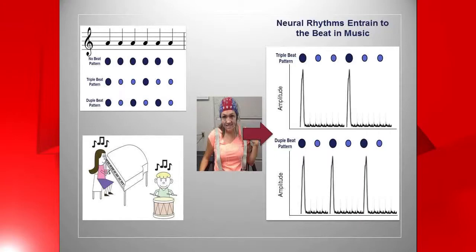If you heard two strong beats, it might sound something like: one, two, three, four, five, six. If you heard three strong beats, it might sound something like: one, two, three, four, five, six. These two beat patterns are very prevalent in musical pieces.